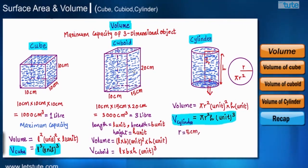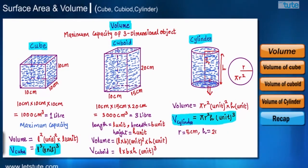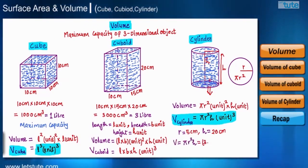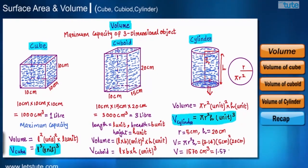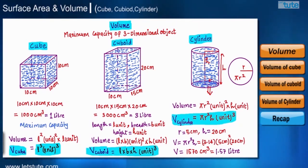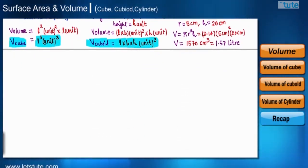Let's solve a problem: a right circular cylinder has radius r = 5 centimeter and height 20 centimeter. What is its volume? Applying the formula gives 1570 centimeter cubed, or 1.57 liters. So far we have learned about the volume of a cube, cuboid, and cylinder.